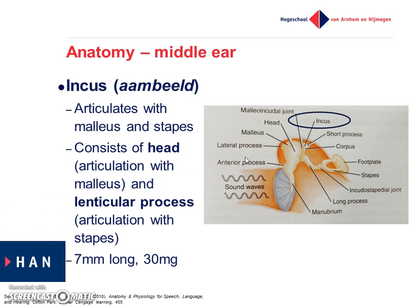The second ossicle is the incus. It is the middle bone of the three bones and it articulates with the malleus and with the stapes. The incus consists of a head where it articulates with the malleus, and a lenticular process — also called the long process — where it articulates with the stapes. The incus is seven millimeters long and about 30 milligrams.